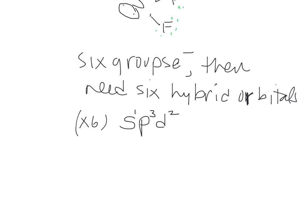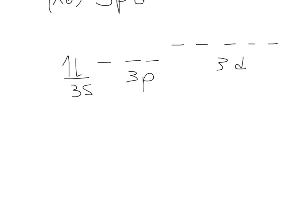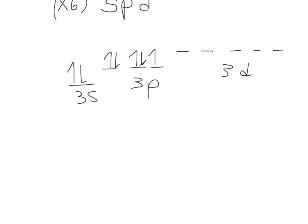We're going to write out the electron configuration, starting with sulfur unhybridized: 3S, 3P, 3D. There are 7 electrons total — the 7th is that extra electron from the negative charge, shown in red. We know we need 2D orbitals to be populated. So you're going to promote — add energy and pop an electron from the S over to the D. Then take one of the other paired electrons and put it over there too.